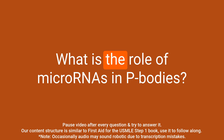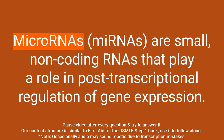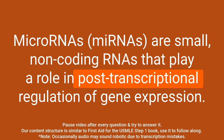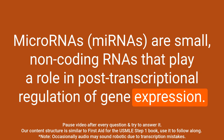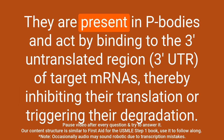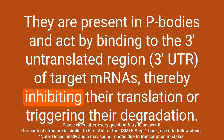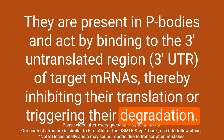Question: What is the role of microRNAs in P bodies? Answer: MicroRNAs are small, non-coding RNAs that play a role in post-transcriptional regulation of gene expression. They are present in P bodies and act by binding to the 3' untranslated region of target mRNAs, thereby inhibiting their translation or triggering their degradation.